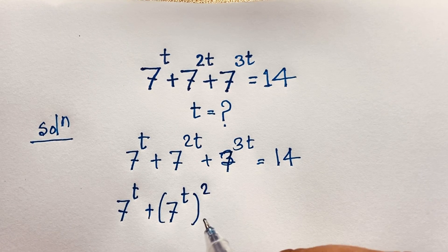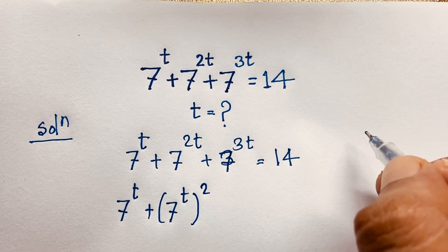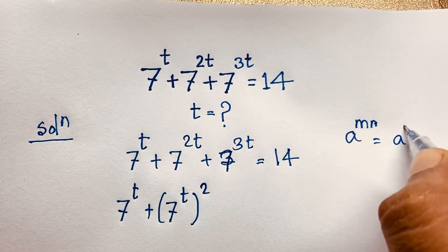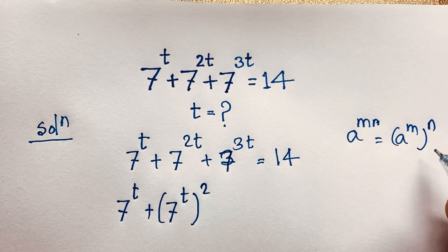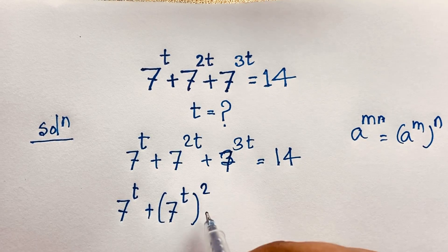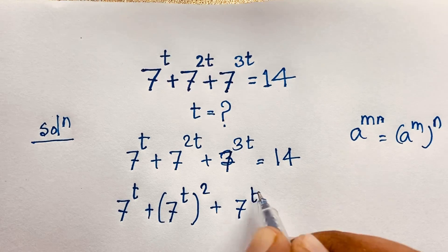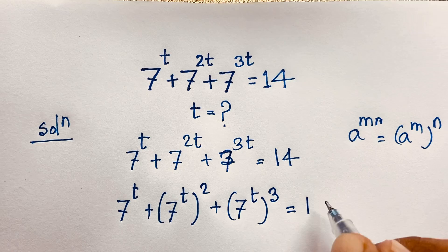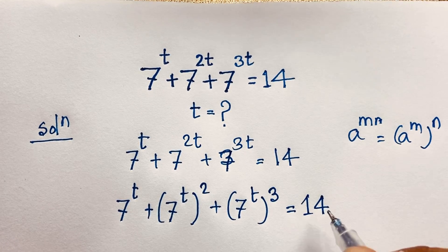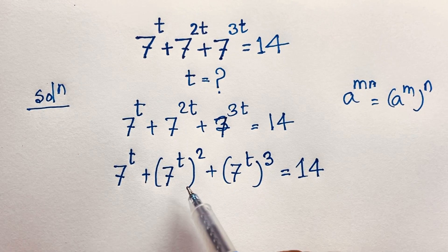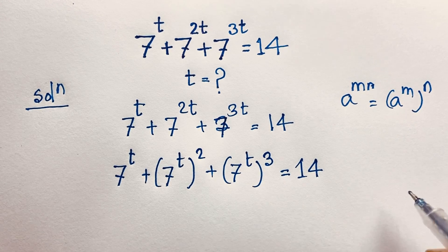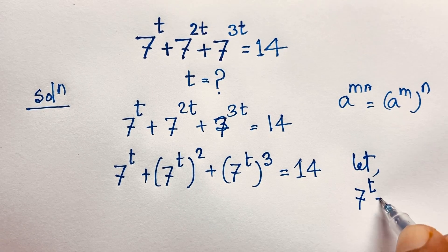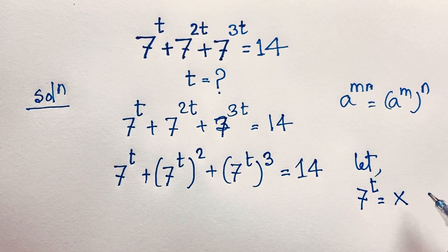I use the exponential formula: a to the power mn equals a to the power m, bracket, whole to the power n. Applying this formula, 7 to the power 3t becomes 7 to the power t, bracket, to the power 3, and the equation equals 14. So let 7 to the power t equal x.